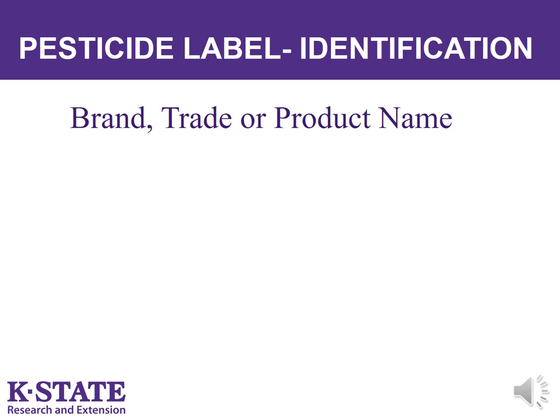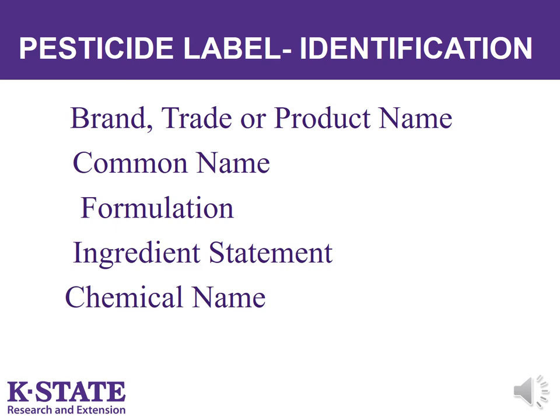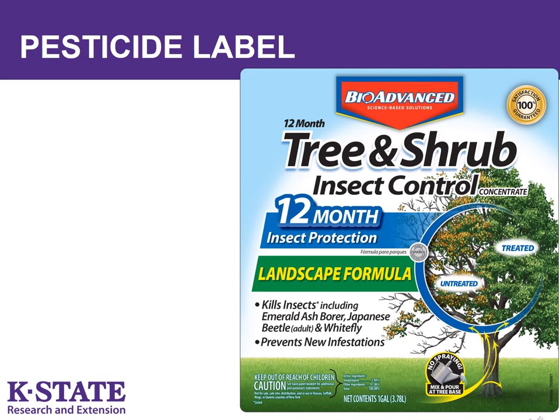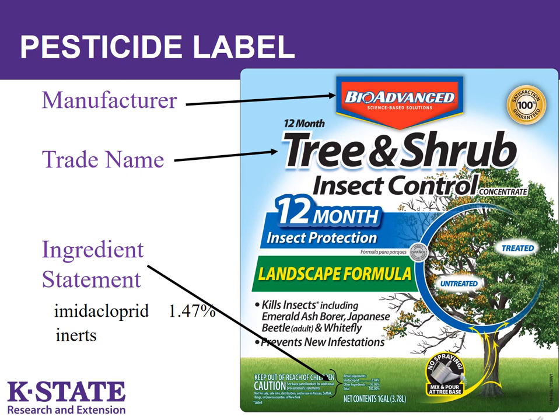Let's talk about the basic information on the front panel of most pesticides. We will look at the brand, trade, or product name, the common name, the formulation, and the ingredient statement. The chemical name is sometimes included but is no longer required. Bio-Advanced Tree and Shrub Insect Control is a very common insecticide used by homeowners. The manufacturer is Bio-Advanced, and their trade name for this product is 12-Month Tree and Shrub Insect Control. The ingredient statement contains the common name of the active ingredient — in this case imidacloprid — and the percent inert ingredients, listed as other ingredients. The chemical name for this active ingredient is not listed.